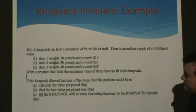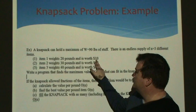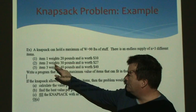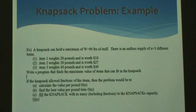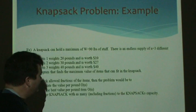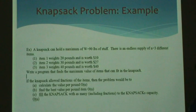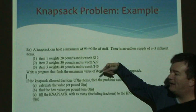Suppose we have an endless supply of three different items. Item one weighs 20 pounds and has a value of $10. Item two weighs 30 pounds and has a value of $27. Item three weighs 40 pounds and has a value of $40. The question is: what should you put in the bag if your goal is to maximize the total value — not weight, but value? One approach would be to enumerate every combination and take the best one, but that might take a while.